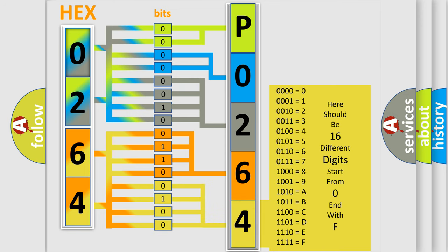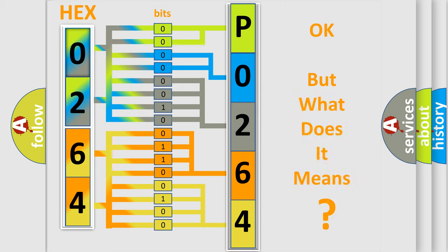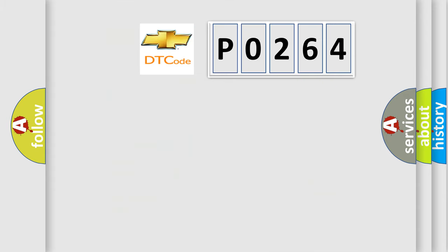We now know in what way the diagnostic tool translates the received information into a more comprehensible format. The number itself does not make sense to us if we cannot assign information about what it actually expresses. So, what does the diagnostic trouble code P0264 interpret specifically for Chevrolet car manufacturers?